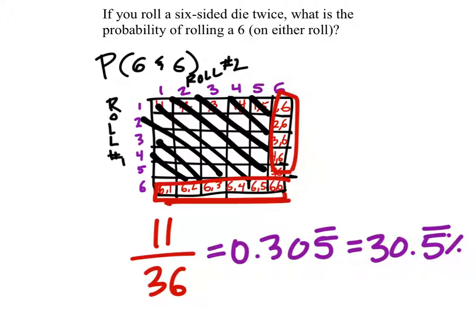So the reason I got 11 is because I added these. So I'm just counting the number of boxes that had six in it. And I could just count these. There's 11 of these boxes.